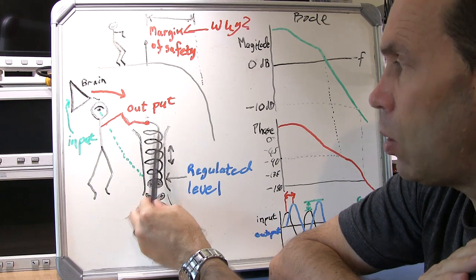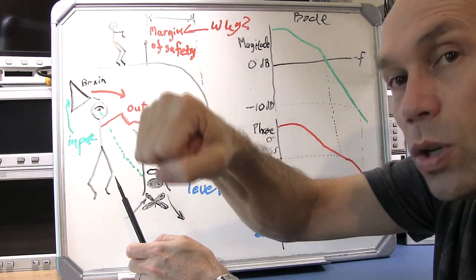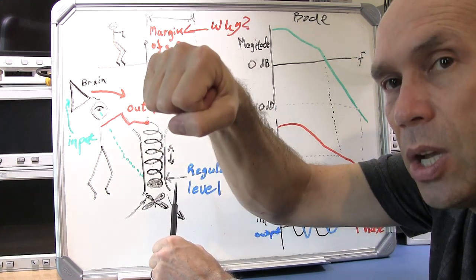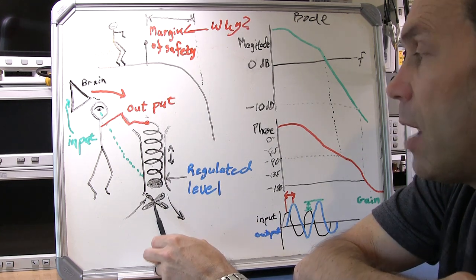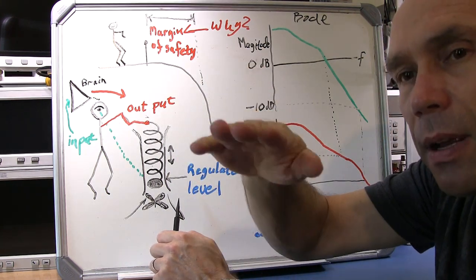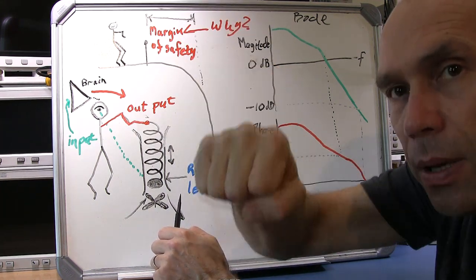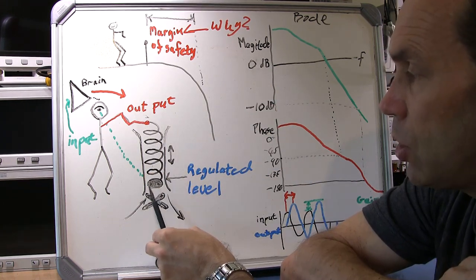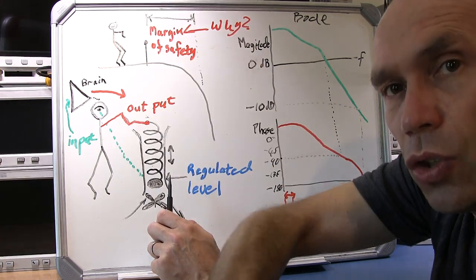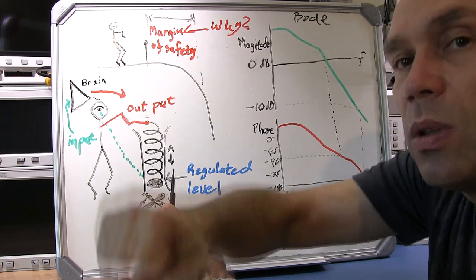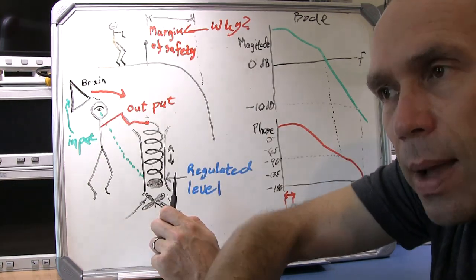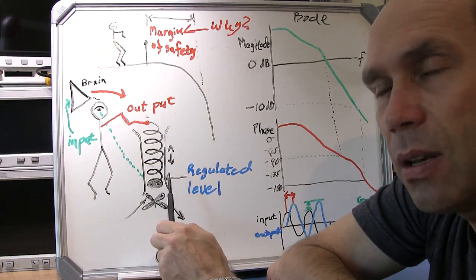The man holds the spring and can lift up or push down to maintain the set level. If the fan is sucking air down, he pulls up to adjust; if the fan blows air up, he pushes down. If that happens frequently, he'll be going up and down with the spring. Two things play a part: the up-and-down movement — which relates to frequency — and the force he applies, which is like the gain or magnitude of adjustment he's putting in to keep the weight at the right level.